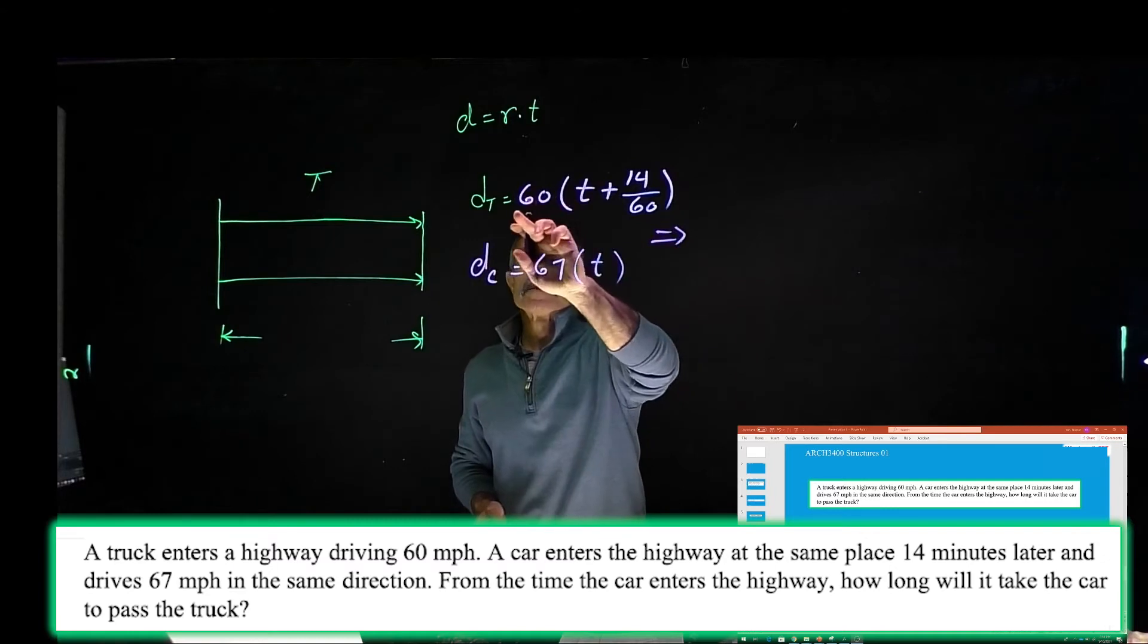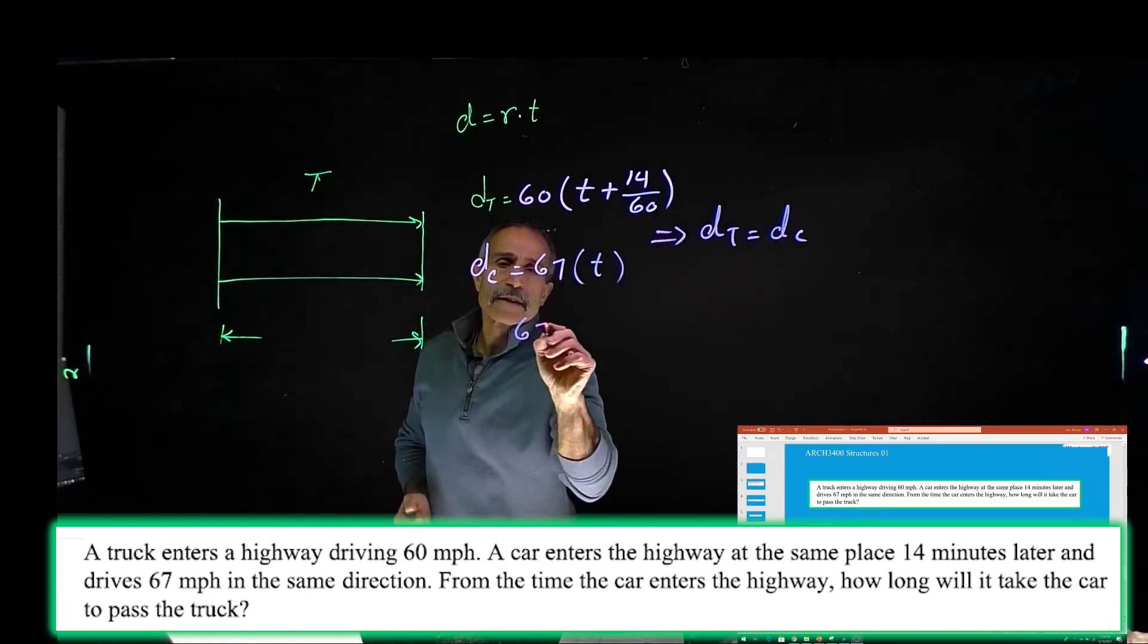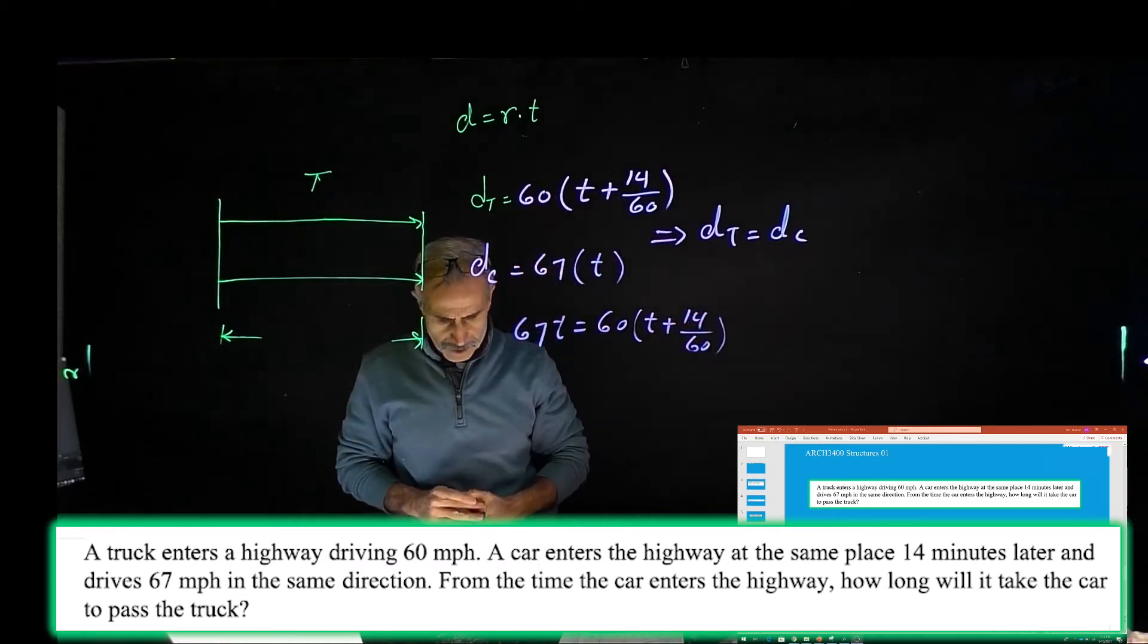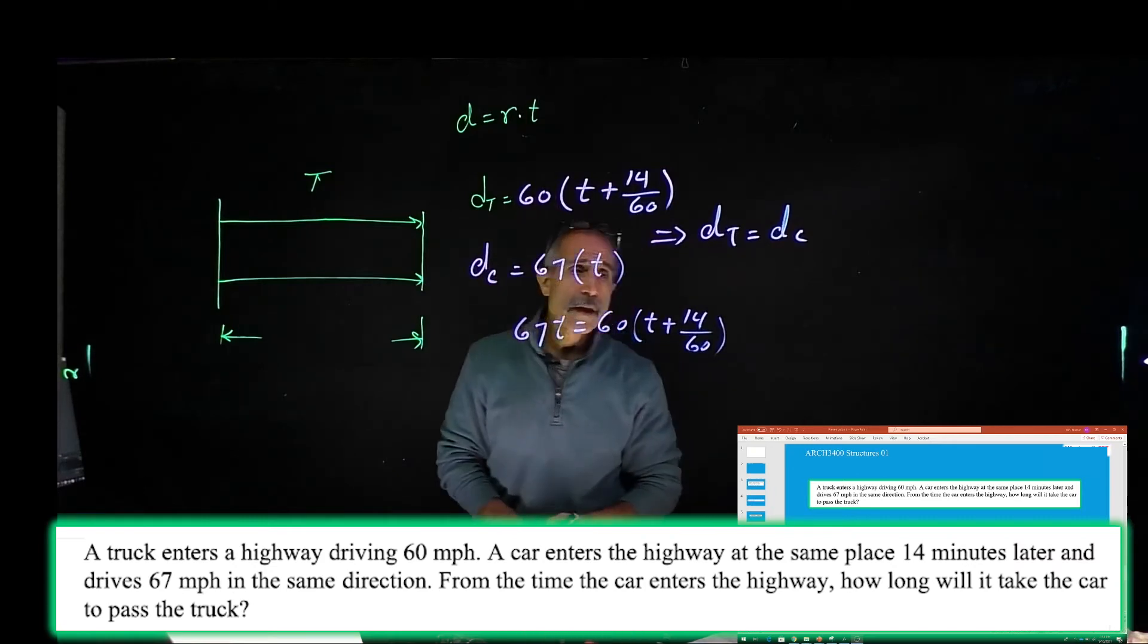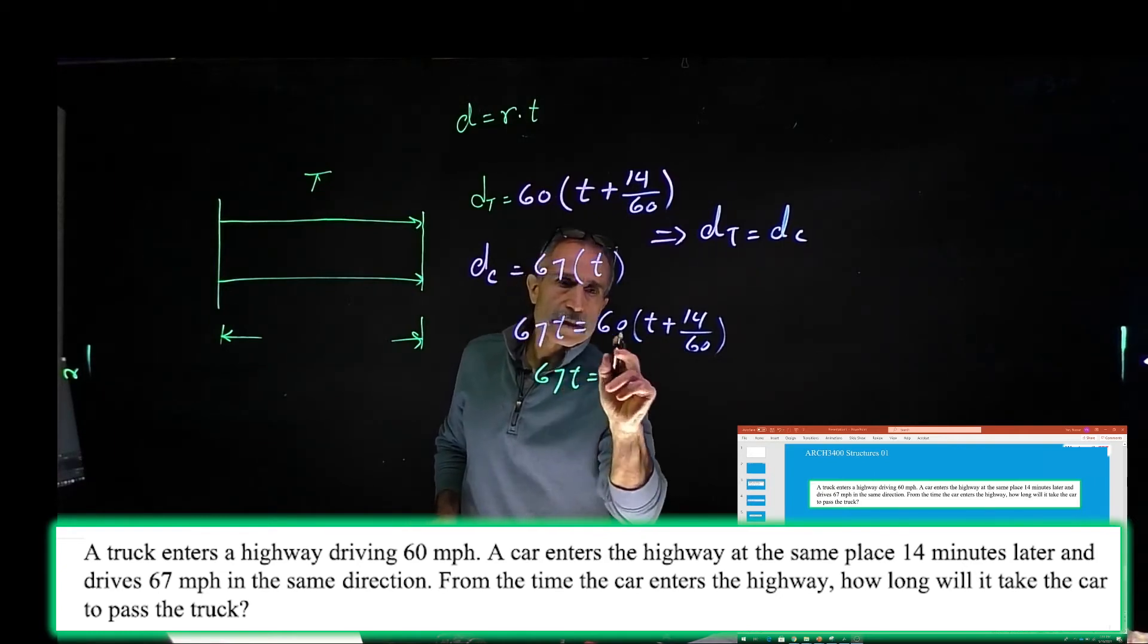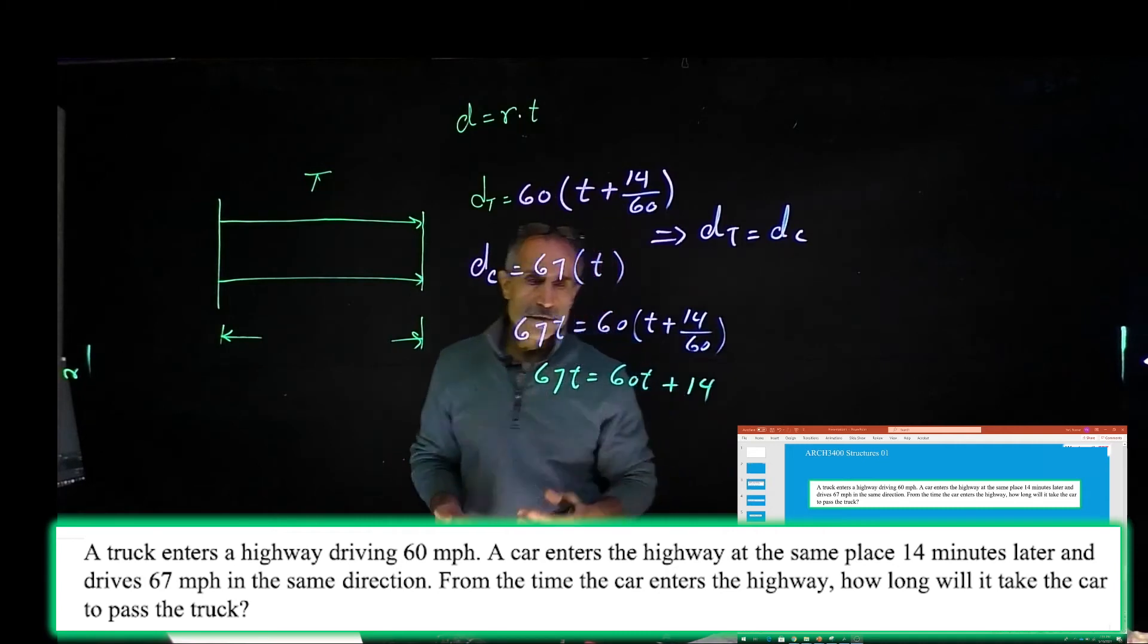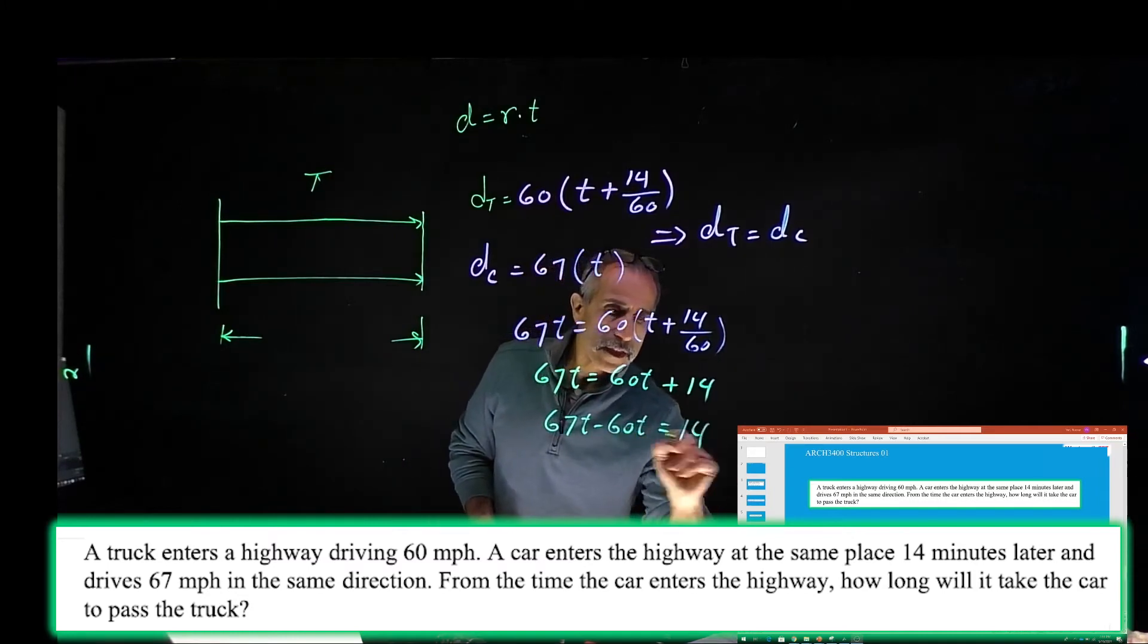From here, because DT equals D car, same distance, I can say 67T = 60 times (T + 14/60). So now I have 67T = 60T + 14. Brings 60T over here. So I got 67T - 60T = 14. Therefore, that becomes 7T = 14, and divide both sides by 7.